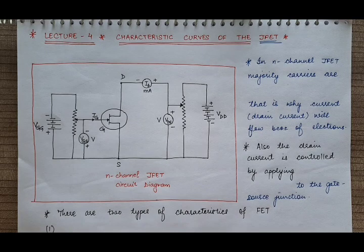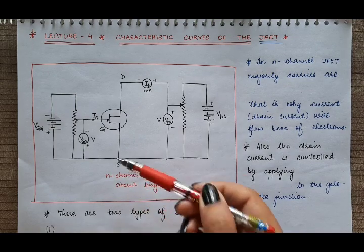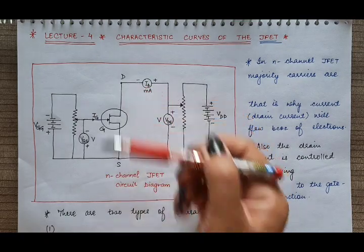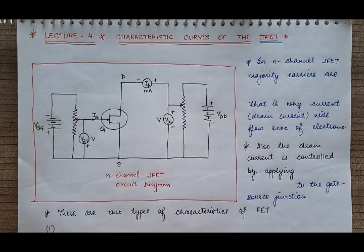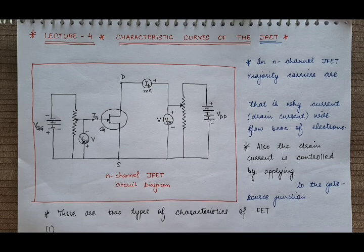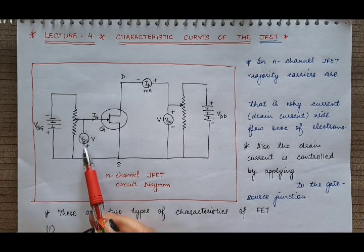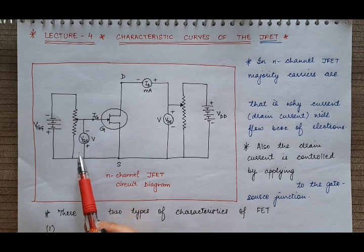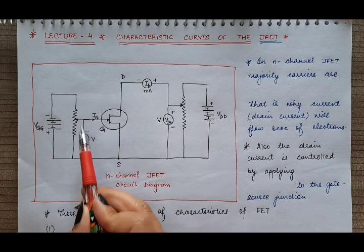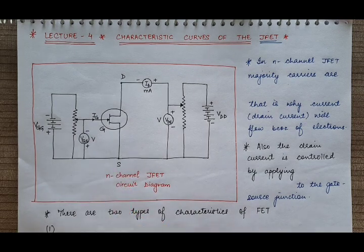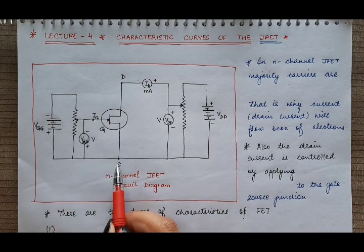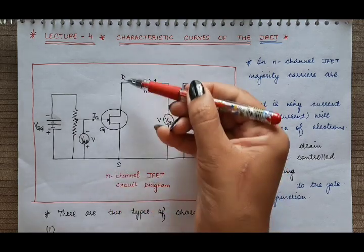As we have already discussed in our first lecture, this FET is a voltage controlled device. It means the current which flows through this N-channel from source to drain is controlled by the voltage applied across the gate-source junction. The voltage applied across this gate-source junction is the reverse bias voltage. We always reverse bias this gate-source junction to control the current through this channel.